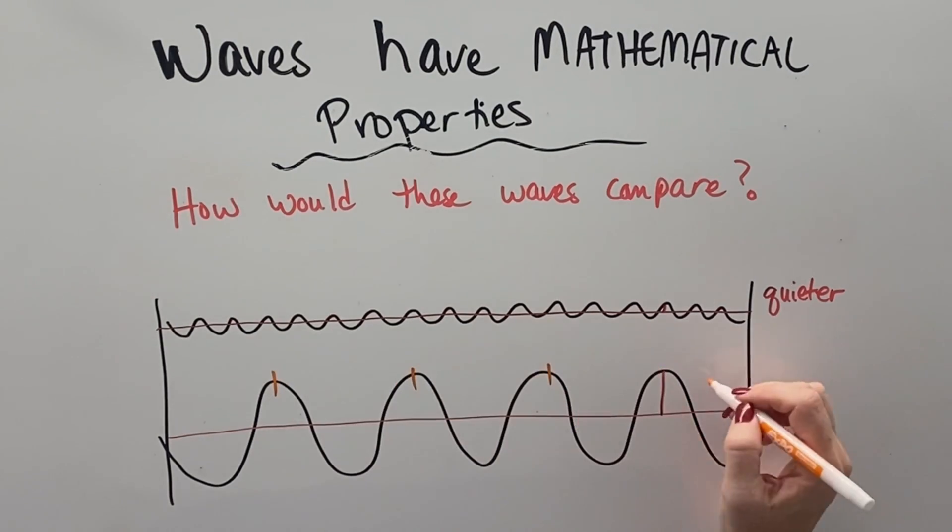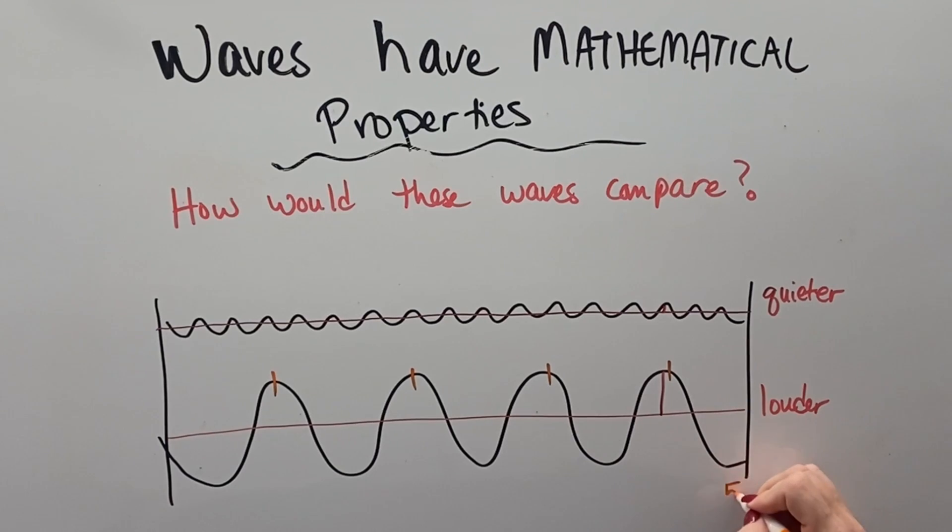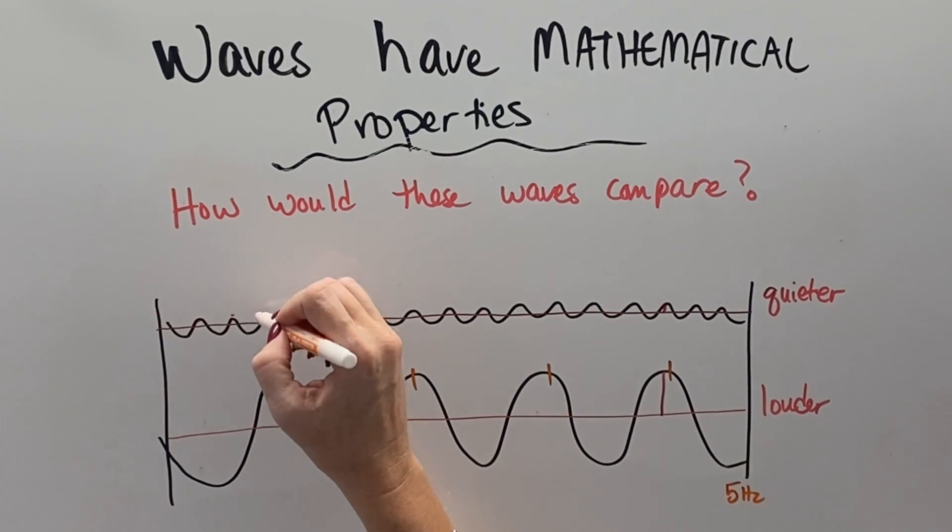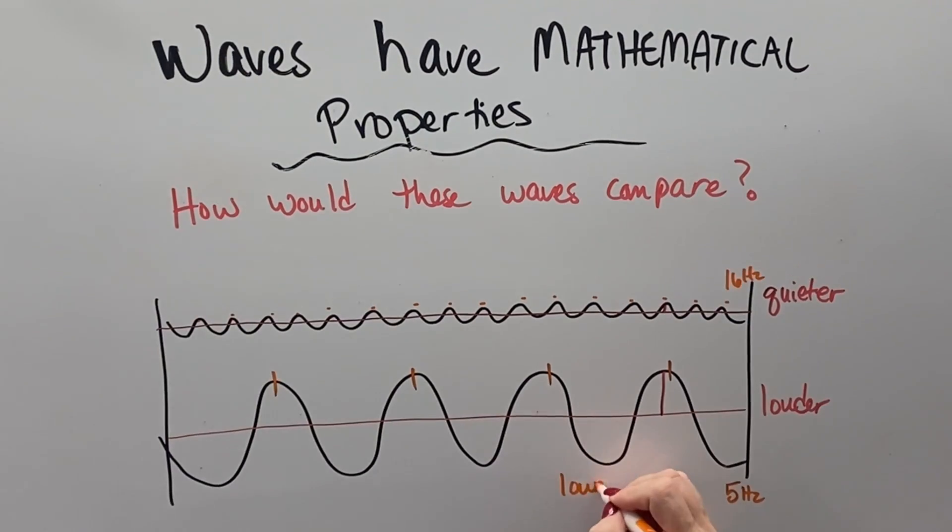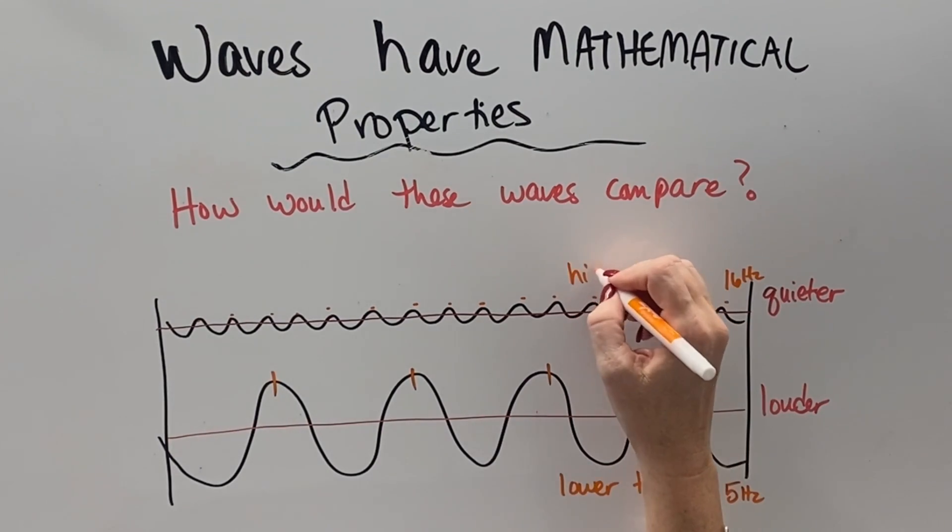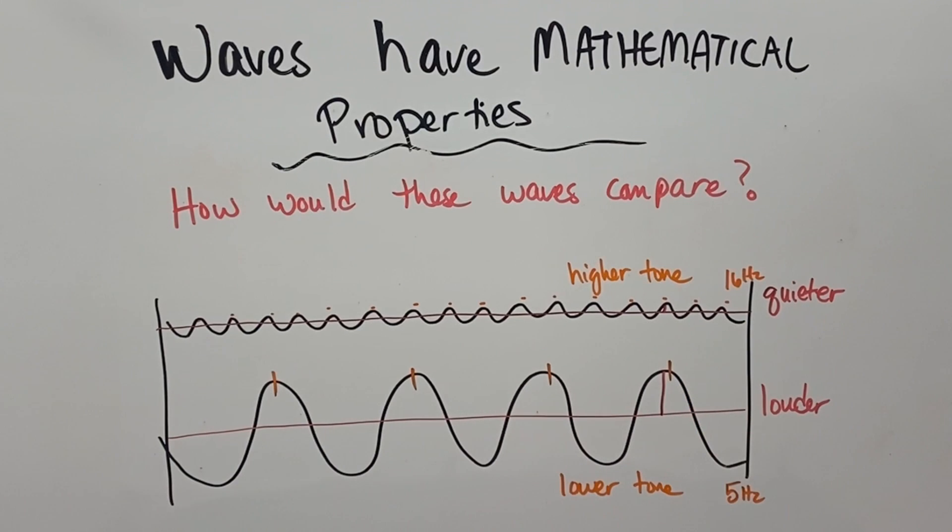And then as far as tone goes, the bottom wave is like 5 hertz frequency. And the top wave has a much greater frequency of 16 hertz. And so the bottom wave would be much lower, but louder. And the higher wave, the top wave would be much higher tone, but much quieter.